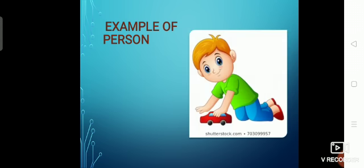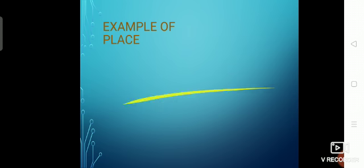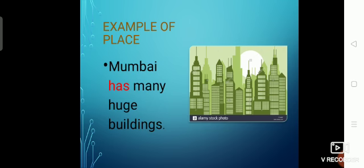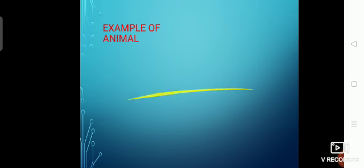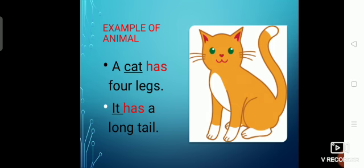Here we have a few examples. You can see a boy in the picture. His name is Dharia. Dharia has a toy car. He has a red car. Dharia is a singular noun and he is a singular pronoun. Next, example of place: Mumbai has many huge buildings. Example of animal: you can see a cat in the picture. A cat has four legs. It has a long tail. Cat is a singular noun and it is a singular pronoun — that's why we use has here.